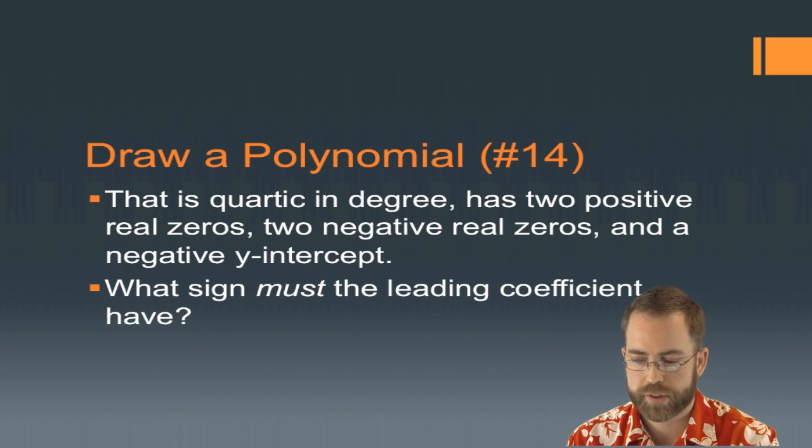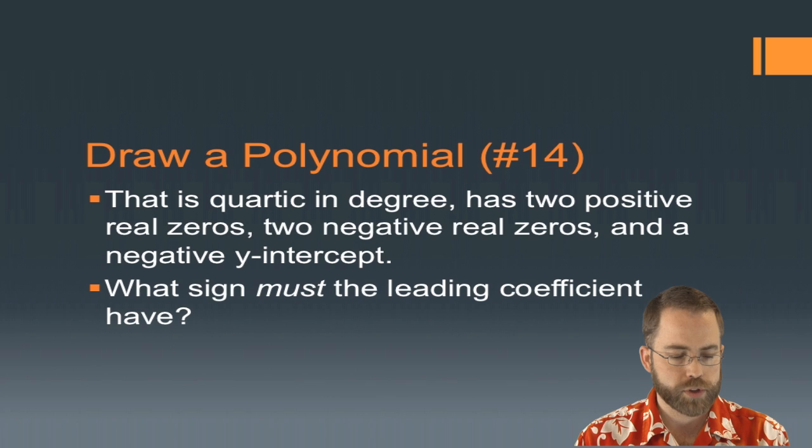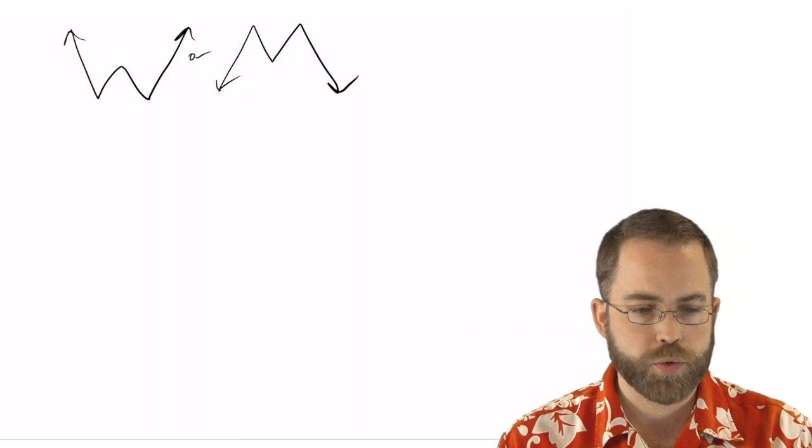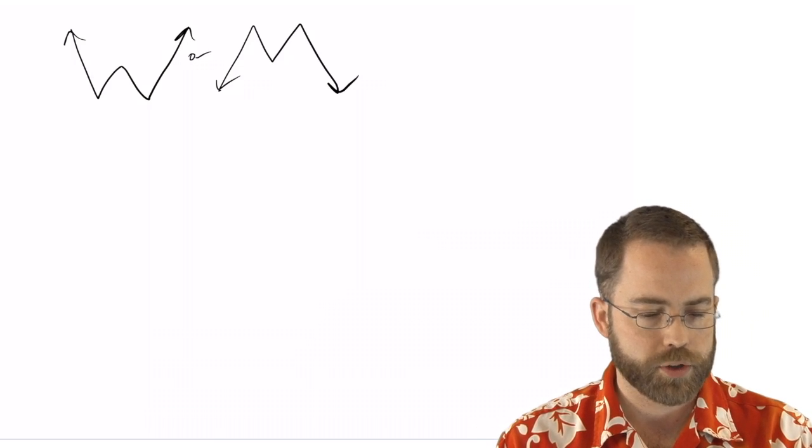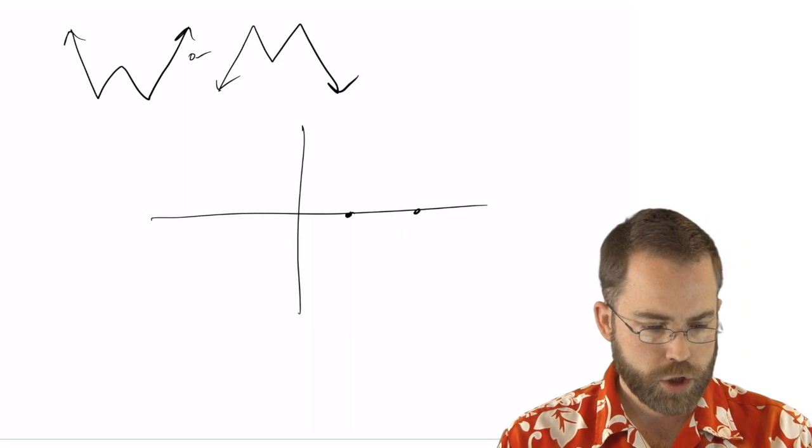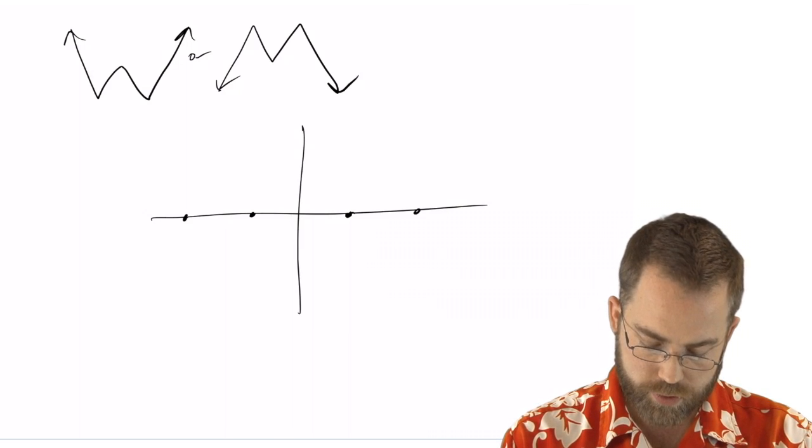So let's try to draw one ourselves. Let's try to make one here according to their specifications. This is number 14 from 15-2 in the book. This is quartic in degree, has two positive real zeros, two negative real zeros, and a negative x-intercept. All right. So quartic in degree means that we've got at most four branches, one, two, three, four. So we're either a W or an M. Those are the fourth degree possibilities. We must have four or less branches. We're going to have two real zeros. So that means we're going to cross over there and over there, two negative real zeros. So over there and over there, a negative y-intercept. So there.